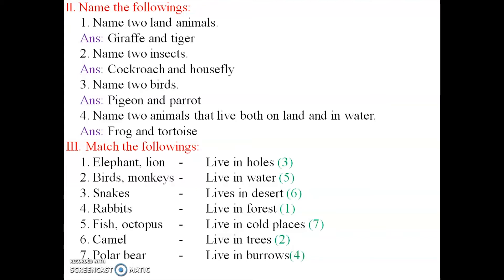Third section: Match the following. One side gives animal names and the other side gives their living places. First: elephant and lion. These are wild animals and they live in the forest.